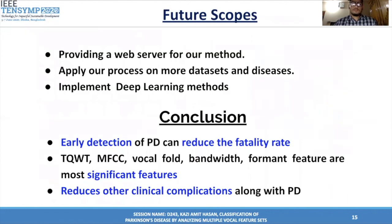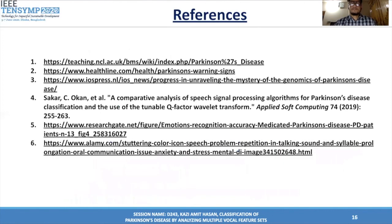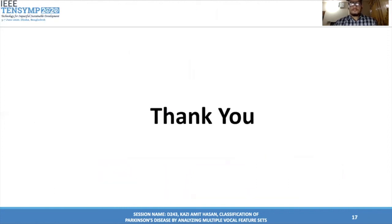Now the future scopes — we want to provide a web server for our method, apply our process onto more datasets, and implement different machine learning methods. In conclusion, early detection of PD can reduce the fatality rate. TQWT, MFCC, vocal fold, and other baseline features are the most significant features. We can also reduce the other complications that come with PD. These are the references used in the slides. Thank you everyone for listening. Please stay home and stay safe.